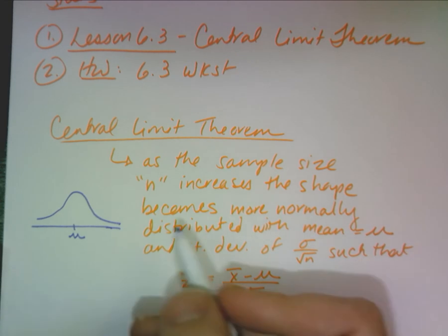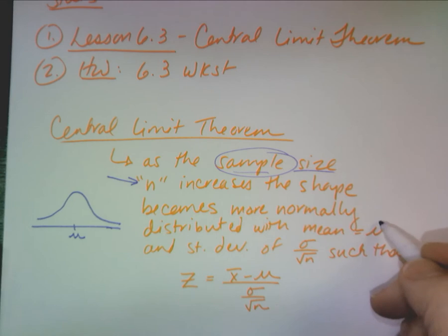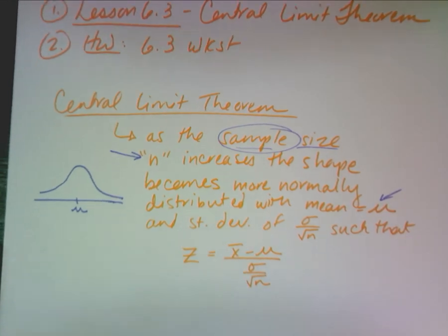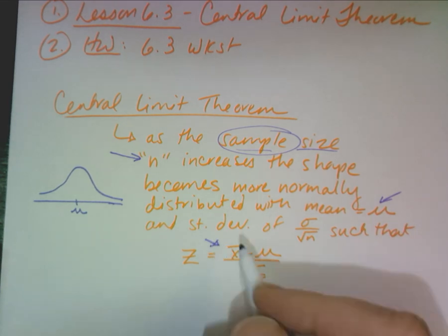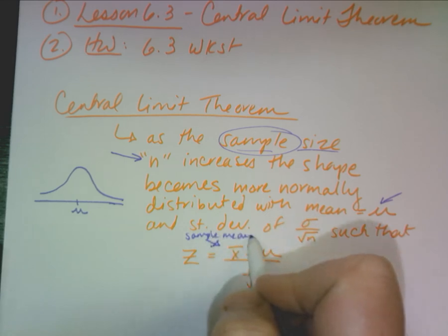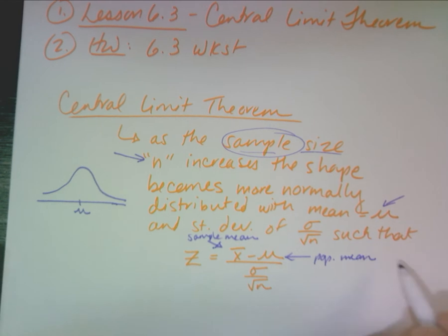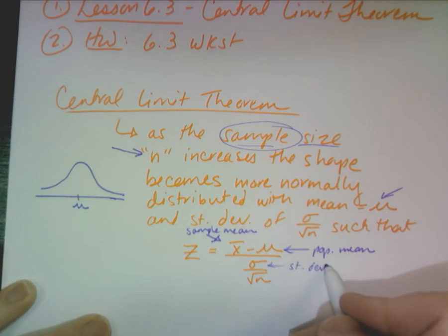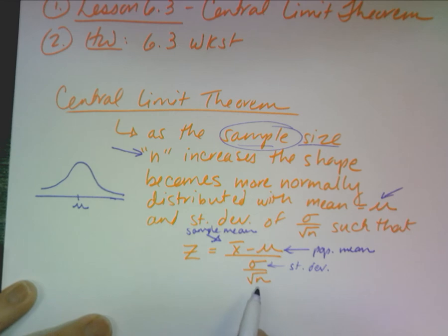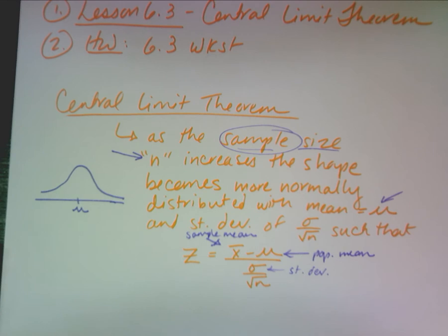My z-score changes just slightly depending on my sample size. So n is your sample size, mu is still your mean, x bar is your sample mean, this is your population mean, and sigma represents the standard deviation. These are the things we're going to be looking at in the three problems we're doing together.